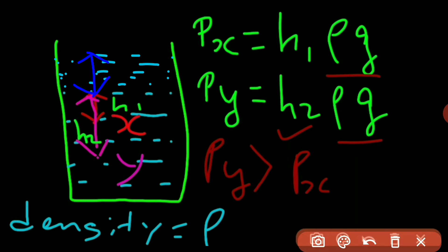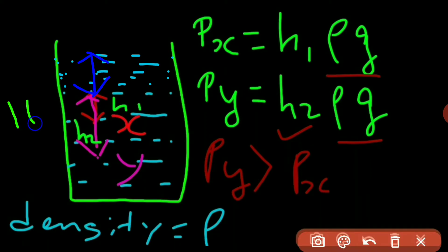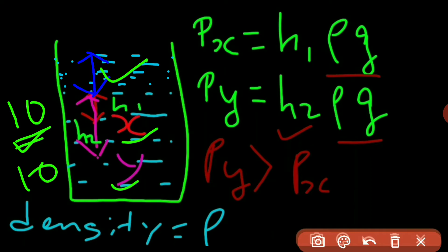This extra height will generate extra pressure. Let that extra pressure on X be 10 Pascals. By what value has the pressure increased on X? That is 10 Pascals. By what value will the pressure increase on Y? It should also be 10 Pascals only, because the increase in height is the same — the new height is the same for both X and Y.